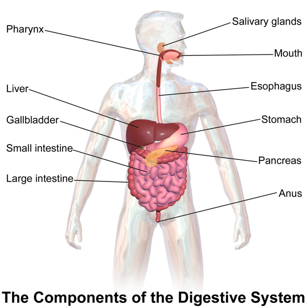Tumors of the small intestine include gastrointestinal stromal tumors, lipomas, hamartomas and carcinoid syndromes. Diseases of the small intestine may present with symptoms such as diarrhea, malnutrition, fatigue and weight loss. Investigations pursued may include blood tests to monitor nutrition such as iron levels, folate and calcium, endoscopy and biopsy of the duodenum, and barium swallow. Treatments may include renutrition and antibiotics for infections.